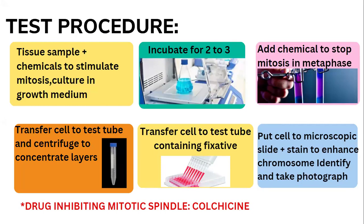The cells are transferred to a test tube and centrifuged to concentrate layers. The upper material is discarded and the remaining cell material is transferred to a test tube containing fixative, which holds the cell material in place. Cells are then placed on microscopic slides, stained with agents to enhance chromosome visibility, and photographs of proper and damaged chromosomes are taken.